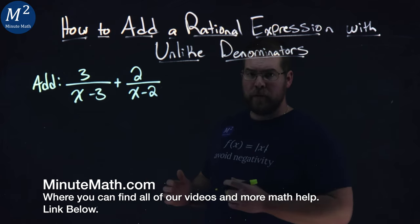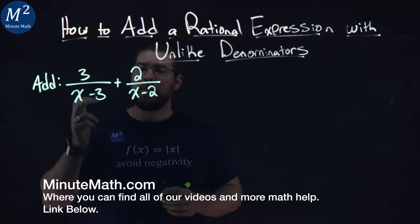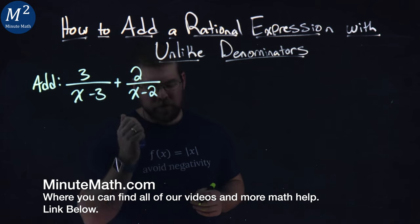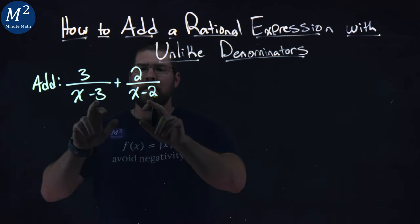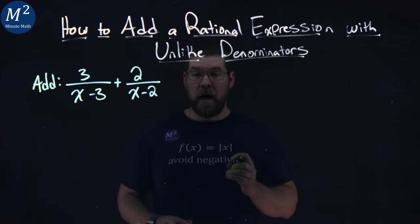We're given this problem right here. We want to add 3 over x minus 3 plus 2 over x minus 2. Now one thing you should notice from the title and what we have here, we have two different denominators. They're unlike.